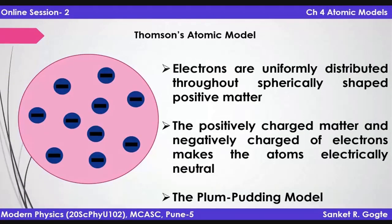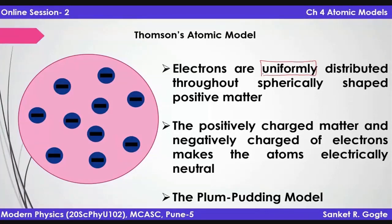Thomson's Atomic Model in brief: the atom is considered to be a sphere in which negative electrons are embedded in positive matter. The pink shade is basically the positive matter, and the electrons are uniformly distributed so that no dipoles are formed. Since electrons are uniformly distributed throughout the spherical atom, the individual atom does not have any inherent electric field of its own, according to Thomson's model.